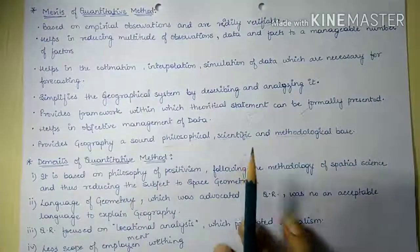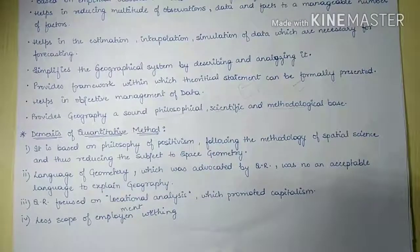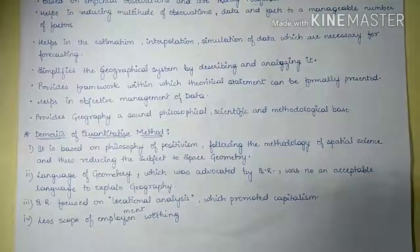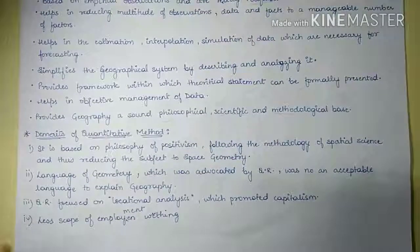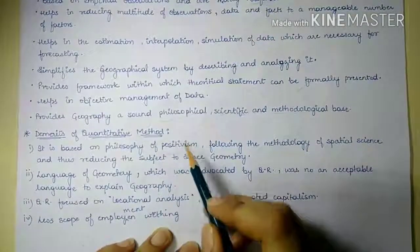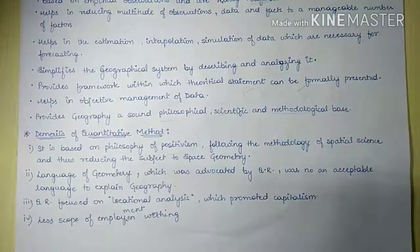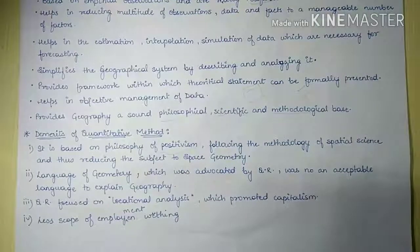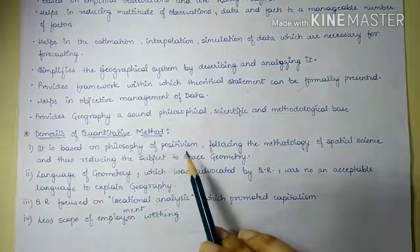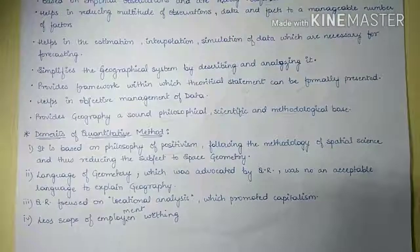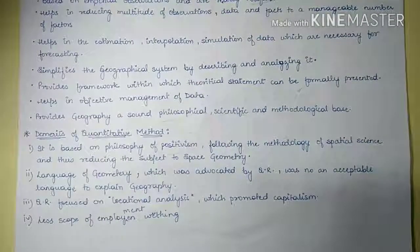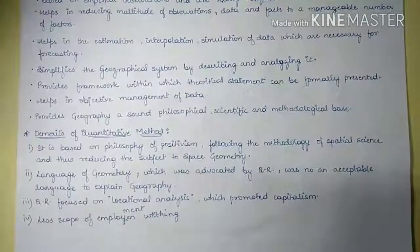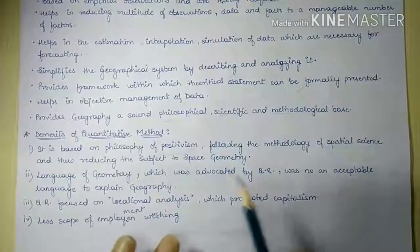Looking at the demerits of quantitative revolution: the first is that quantitative method is based on the philosophy of positivism — it is free from religious or metaphysical biases. This philosophy of positivism distinguishes geographical science from religious and metaphysical biases, but because of it, the subject of geography is simply reduced to a subject of space geometry.